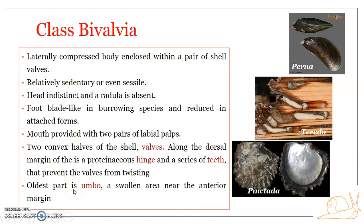Most bivalves are suspension feeders. The circulatory system is open type with a trilocular (three-chambered) heart having two auricles and a single ventricle. Bivalves are also known as Lamellibranchiata because of their highly developed and extensive ctenidia. The respiratory organs are represented by a pair of lamelliform gills — plate-like and very expanded — which is why the name Lamellibranchiata is used.